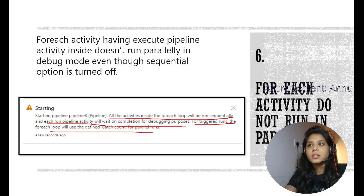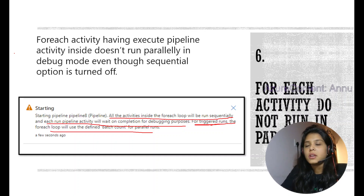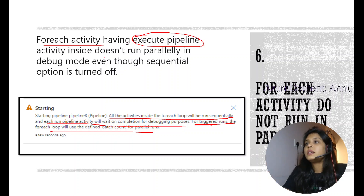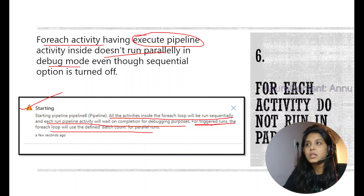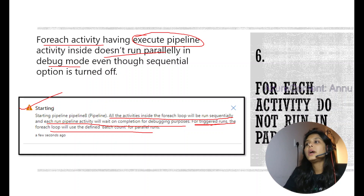For triggered runs, the For Each loop will use the defined batch count for parallel runs. So if you want to run in parallel, you need to go for triggered runs. This warning occurs whenever For Each activity has an execute pipeline activity inside it — it does not run in parallel in debug mode. You will only face this warning if you are using execute pipeline activity inside For Each.